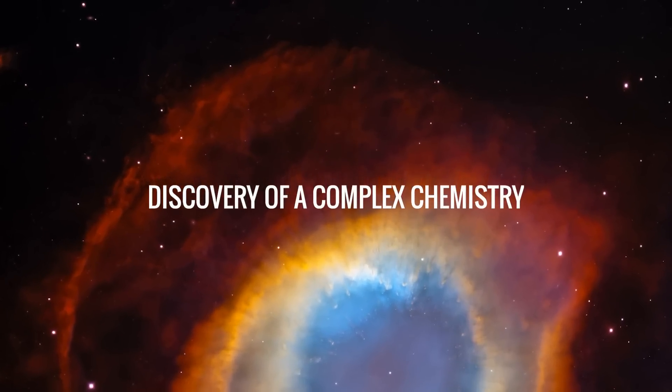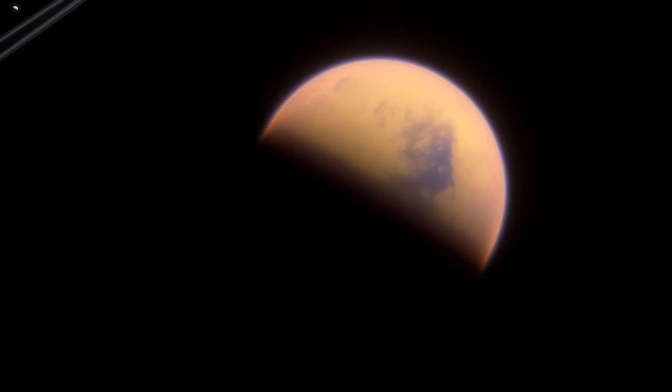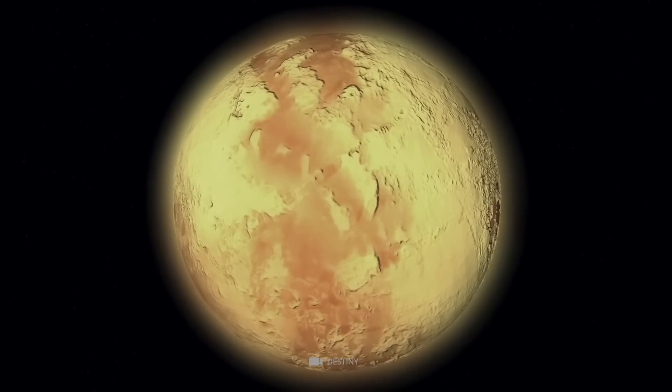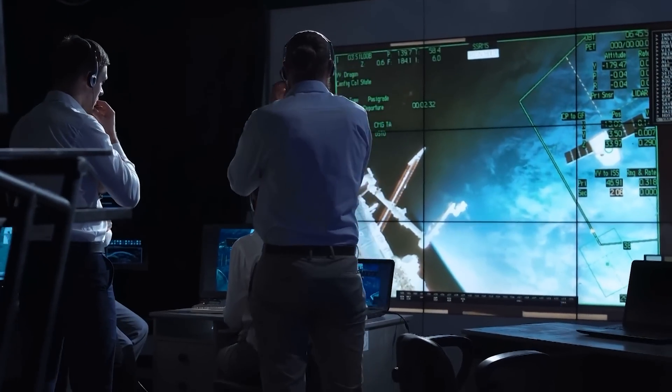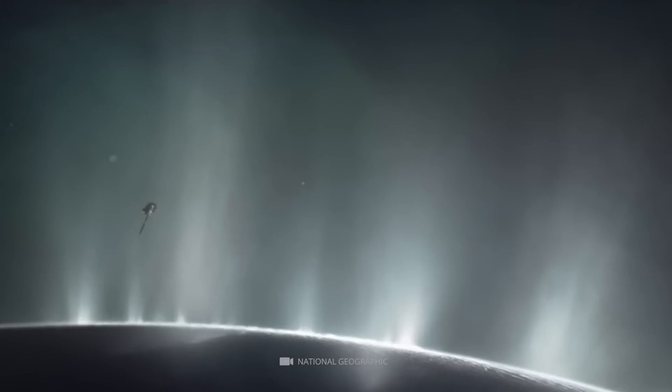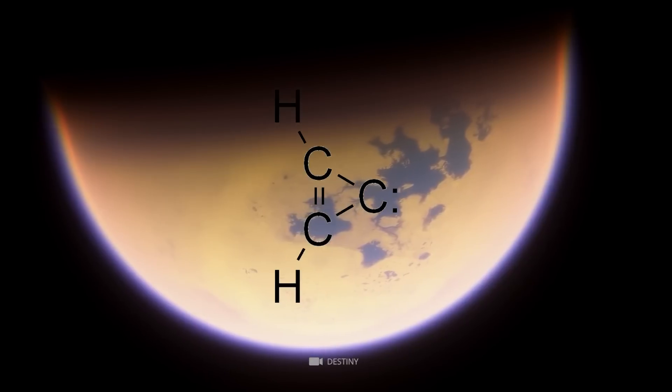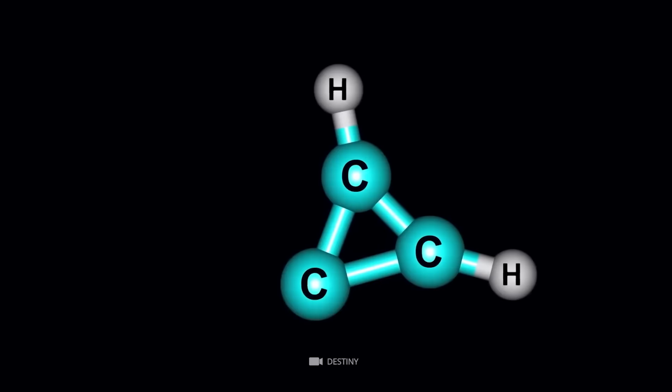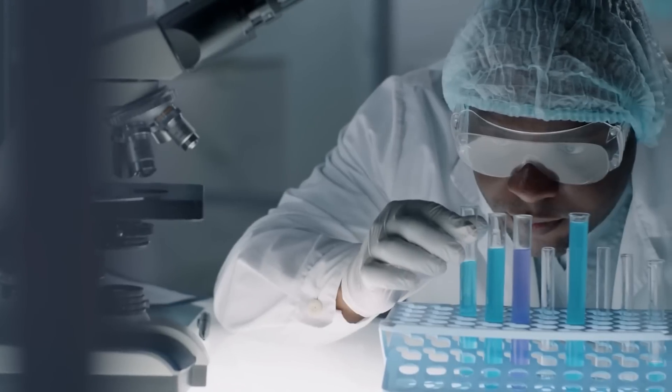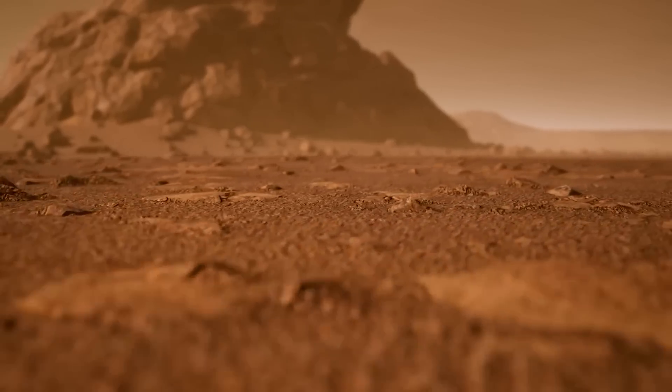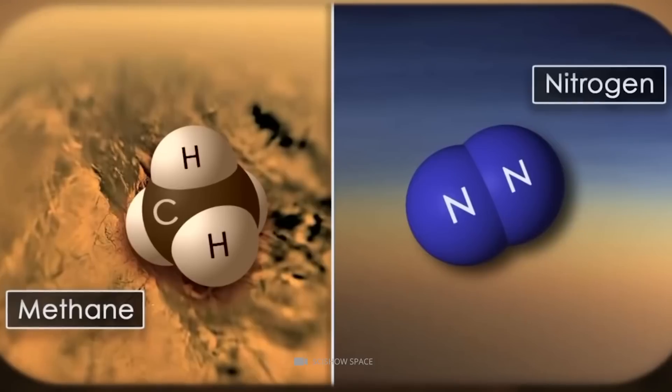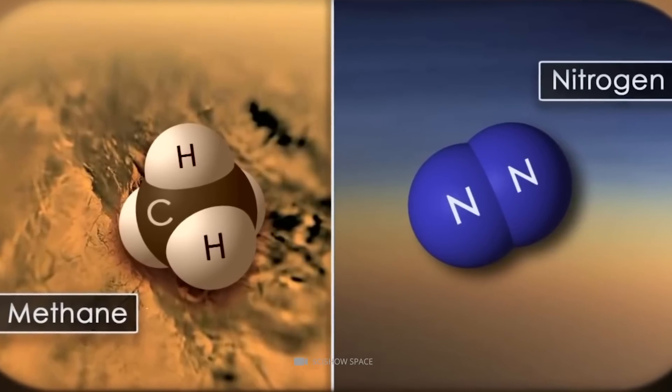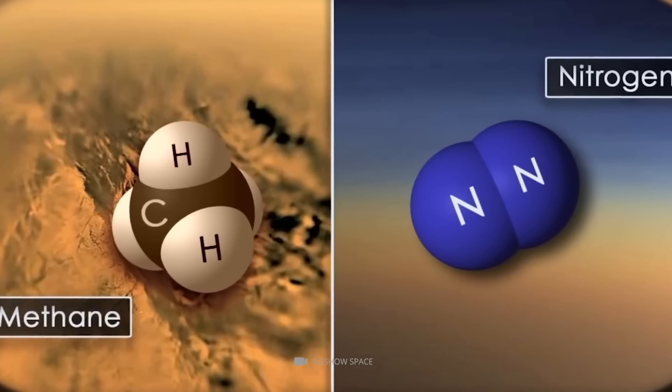Discovery of complex chemistry. Another intriguing discovery about Titan is its surface's complex chemistry. This complex chemistry was first discovered by the Cassini spacecraft in 2004, which detected a variety of molecules, such as acetylene, propane, and hydrogen cyanide. These molecules were found to be produced through a series of chemical reactions in Titan's atmosphere, which is mostly comprised of nitrogen with small amounts of methane and other gases.